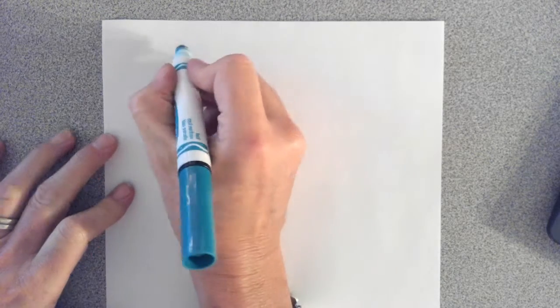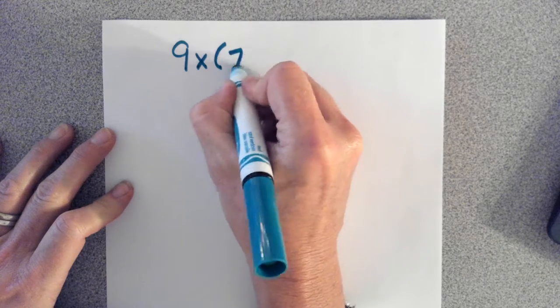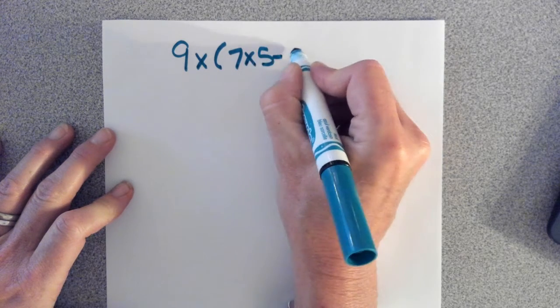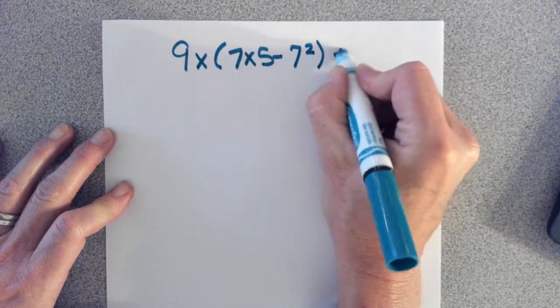Hello students! Here's another problem we can attack with order of operations. Let's say I've got 9 times parentheses 7 times 5 minus 7 to the power of 2 parentheses plus 9.